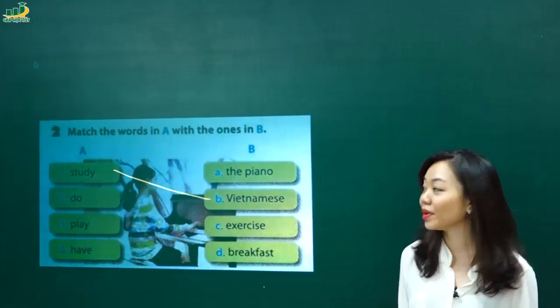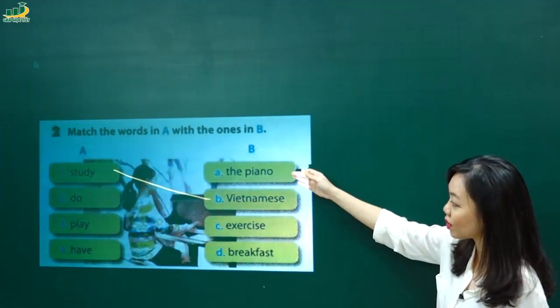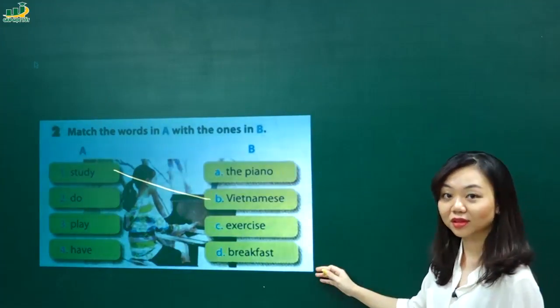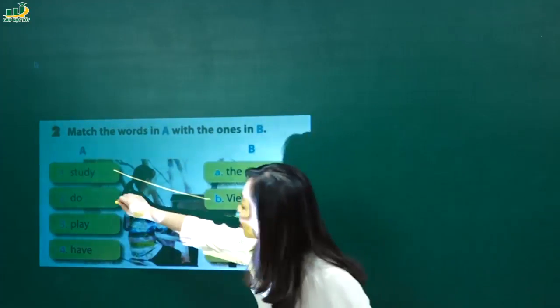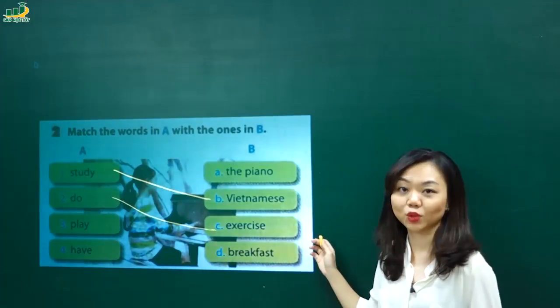Do. Mình có do sẽ nối với cái từ nào nhỉ? Do the piano. Do exercise. Do breakfast. No. Do exercise. Chính xác. Do exercise là tập thể dục.